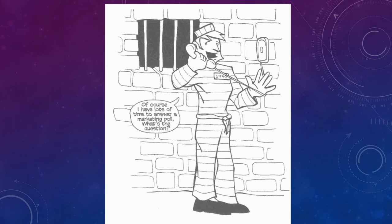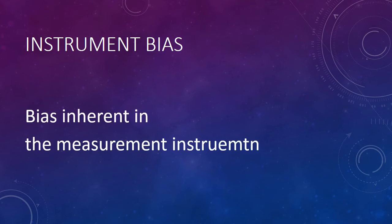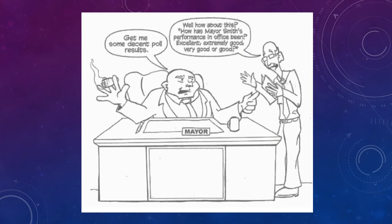Another type of bias is instrument bias — bias that is inherent in the measurement instrument, like the survey questionnaire, perhaps due to leading questions or differences in people's interpretation of the meaning of words. For example, a mayor says 'I want to see some good results,' and his assistant says 'Sure, we'll ask people whether they think your performance is good, better, or great.' Clearly, this instrument is going to produce biased results.